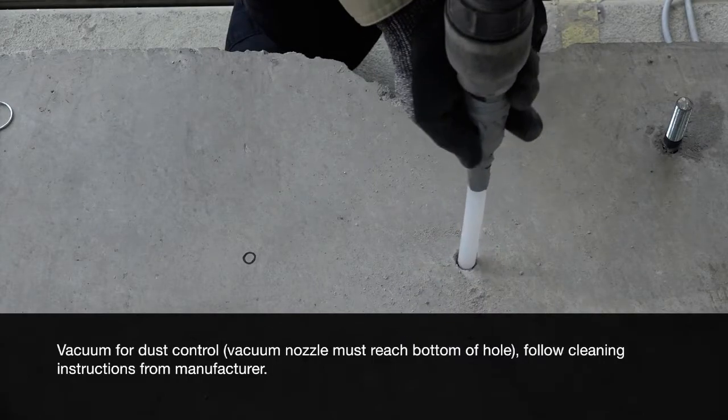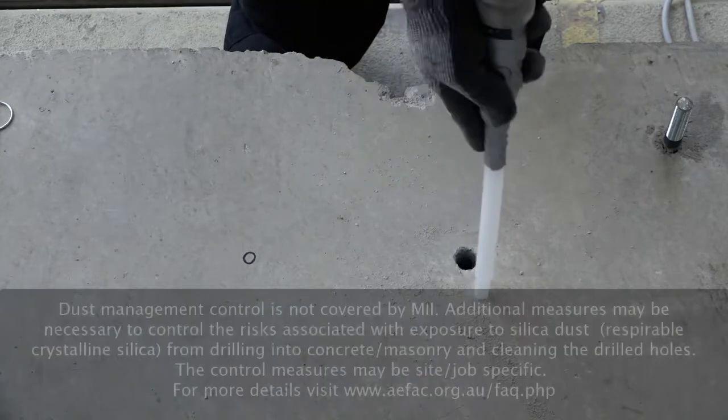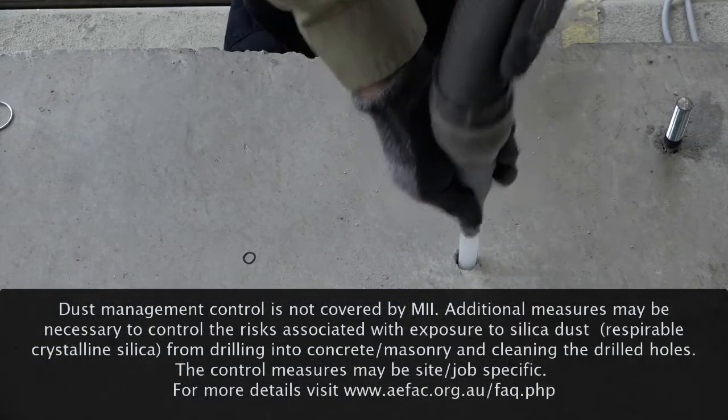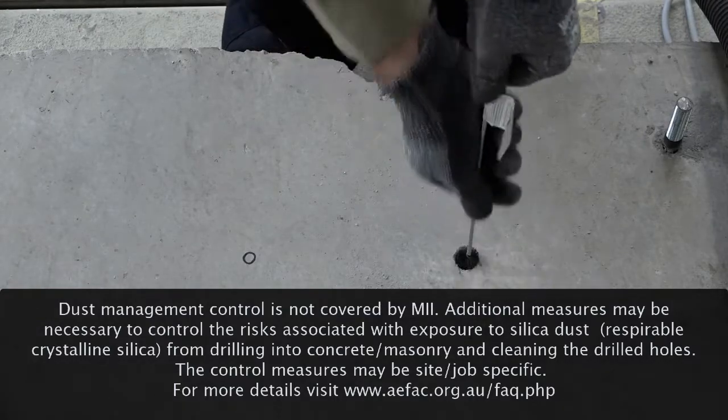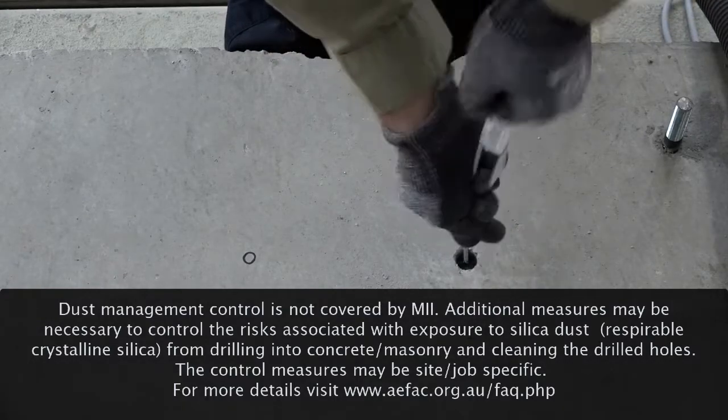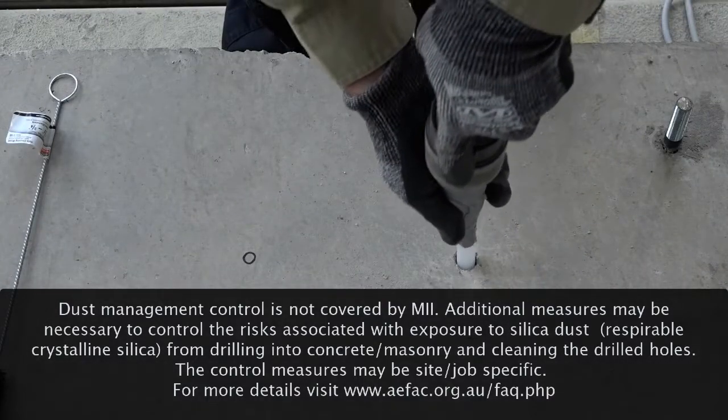Our vacuum attachment is on. Go to the bottom of the hole. Clean around our work area. Do our brush. Twisting action. And finally, vacuum.